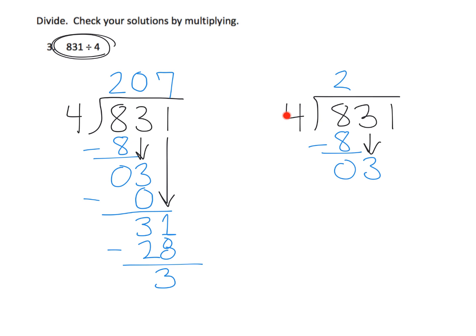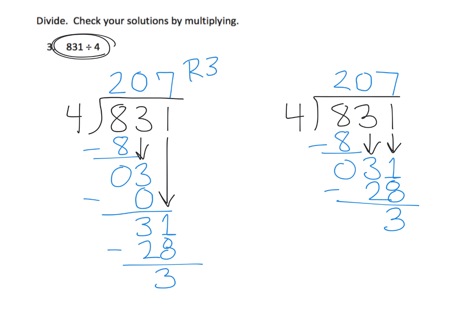Three tens divided amongst four groups — we cannot do that — so we're going to put a zero here, just like before. But now I'm going to bring down the one ones, so we now have three tens combined with one one, giving us thirty-one ones. Thirty-one ones divided amongst four groups means each group gets seven ones; we've used up twenty-eight ones and we have three left over. In both cases we get the answer of 207 remainder 3. This second method is a shortcut: in the first method we explicitly multiplied zero times four and got zero; in the second we implicitly skipped it and just brought down the additional one.